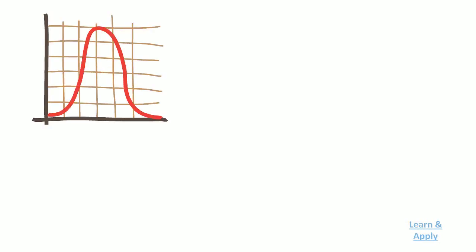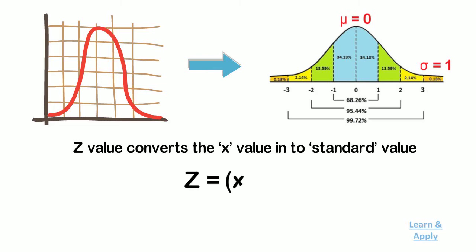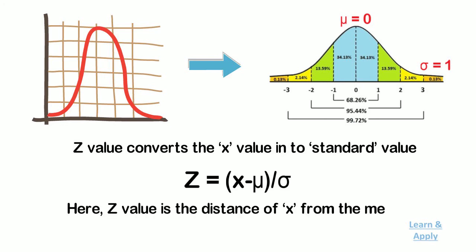Any other normal distribution can be transformed to the standard normal distribution to calculate areas between or beyond x values. Z value converts the x value into a standard value. Z is calculated by x minus mu divided by sigma. Here, Z value is the distance of x from the mean mu in number of standard deviations.